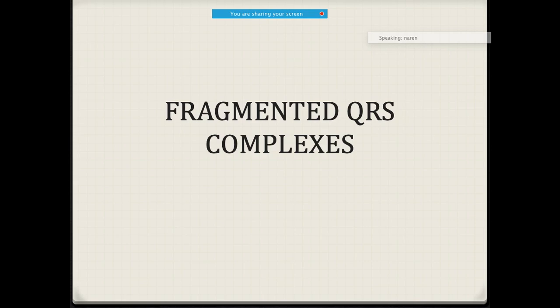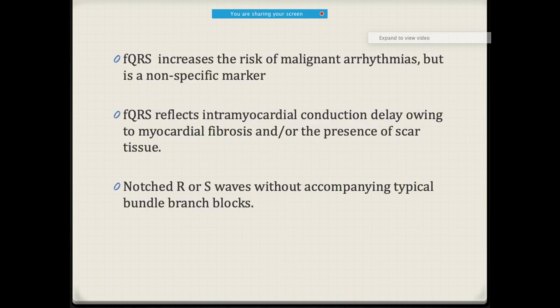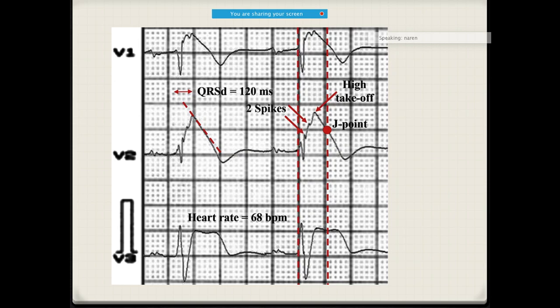Fragmented QRS occurs due to defective intramyocardial conduction delay secondary to fibrosis or scar tissue. The typical bundle branch blocks are not seen. It can appear as RSR' pattern, notching of the S wave, or notching of the R wave.